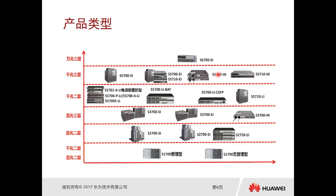Now let's look at the product forms, divided by rate and model. The S1700 is all Layer 2 switches, with some having 100 Mbps downstream and some having 1 Gbps downstream. The S2700 series are all 100 Mbps downstream Layer 2 switches. This can also be seen in the diagram — the S2700 is a Layer 2 switch with 100 Mbps downstream speed.